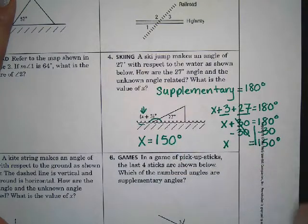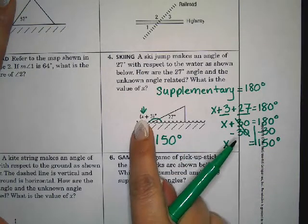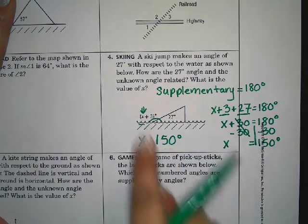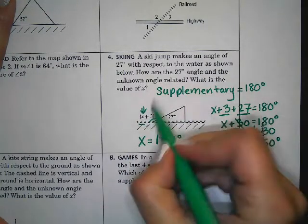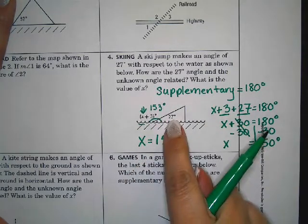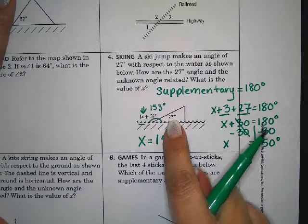Now I can check my work by plugging it back in for x. So x plus 3, 150 plus 3 gives me 153 degrees, and if I add that to 27, it should give me 180.